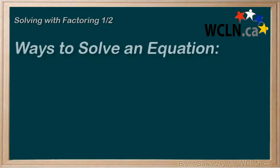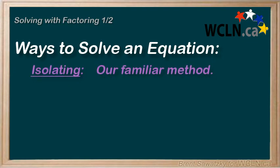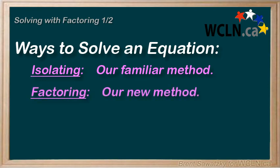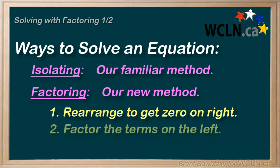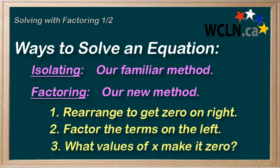In this tutorial, we looked at a new way to solve equations. We first reviewed our previous method, a very solid method, that is, isolating the variable. And then we considered this new method, solving by factoring. In this method, we first rearrange the equation so it has a 0 on the right. And then, we factor the left side to make it more apparent which values of x would cause a multiplication to be 0. Now, we know that a multiplication by 0 equals 0.